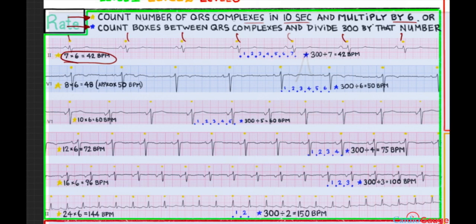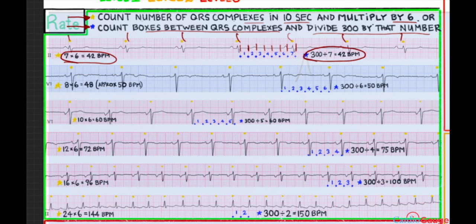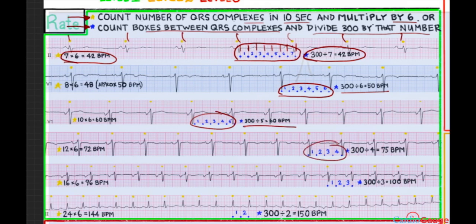The second way is to count the number of medium-sized boxes between QRS complexes and divide 300 by that number. Counting here gives us 7 boxes, so 300 divided by 7 is about 42 beats per minute. I've memorized these: 6 boxes equals 50 bpm, 5 boxes equals 60 bpm, 4 boxes equals 75 bpm, 3 boxes equals 100 bpm, and 2 boxes equals 150 bpm. Generally I use this second method because it's faster.